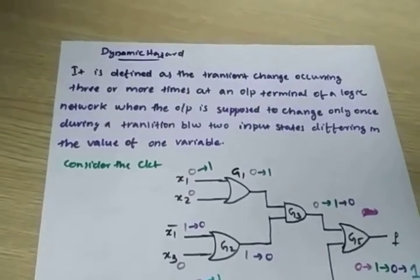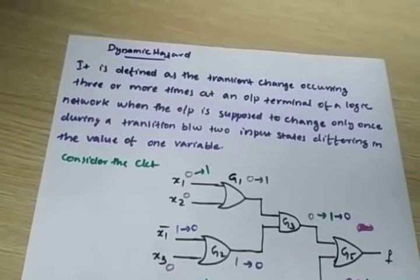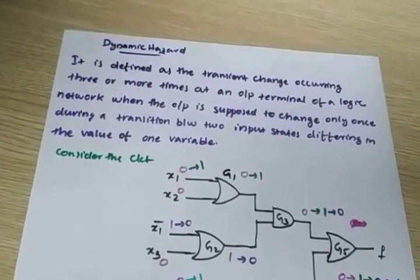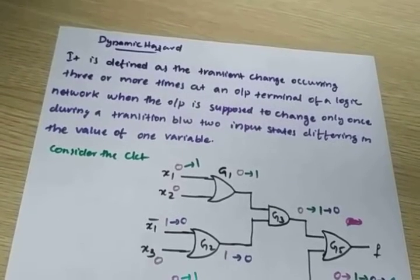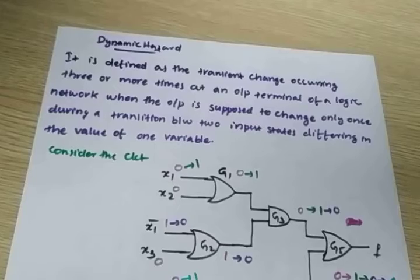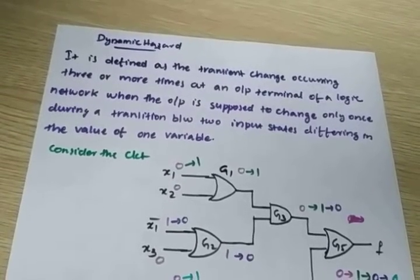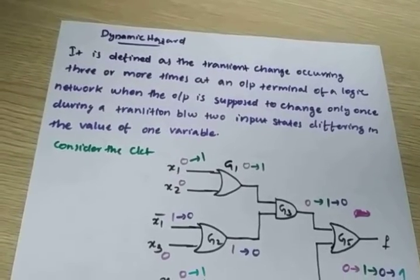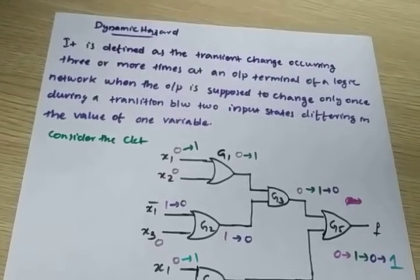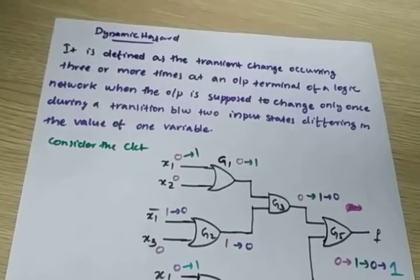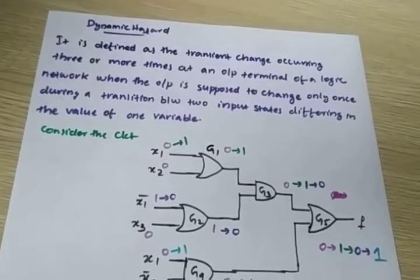Dynamic hazard is defined as the transient change occurring three or more times at an output terminal of a logic network when the output is supposed to change only once during the transition between two input sets differing in the value of one variable. That means here the state transition occurs three or more times when only one input bit changes.